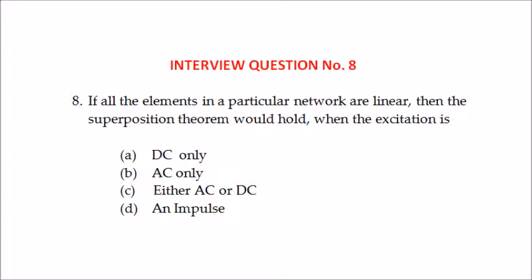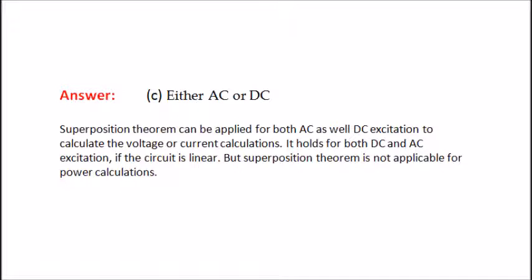Eighth question: if all the elements in a particular network are linear, then the superposition theorem would hold when the excitation is — DC only, AC only, or either AC or DC? The answer is either AC or DC. Because the superposition theorem can be applied for both AC and DC excitation to calculate voltage or current. It holds for both DC and AC excitation if the circuit is linear. However, the superposition theorem is not applicable for power calculations.